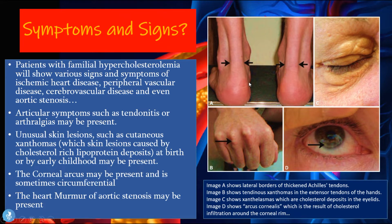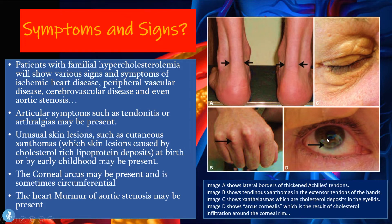Looking at picture A, we see the lateral borders of thickened Achilles tendons seen bilaterally. The patient may also have unusual skin lesions such as cutaneous xanthomas — skin lesions caused by cholesterol-rich lipoprotein deposits at birth or by early childhood. Picture B shows tendinous xanthomas on the extensor tendons of the hands. Picture C shows xanthalasma, which are cholesterol deposits in the eyelids. The corneal arcus may also be present and is sometimes circumferential, as shown in picture D.